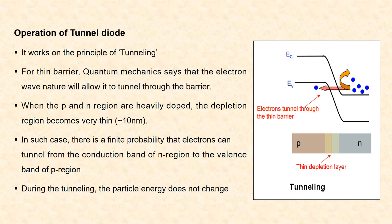Next is the operation of tunnel diode. It works on the principle of tunneling. For a thin barrier, quantum mechanics says that the electron wave nature will allow it to tunnel through the barrier. When the p and n regions are heavily doped, the depletion region becomes very thin, approximately 10 nm. In such case, there is a finite probability that electrons can tunnel from the conduction band of n region to the valence band of p region.